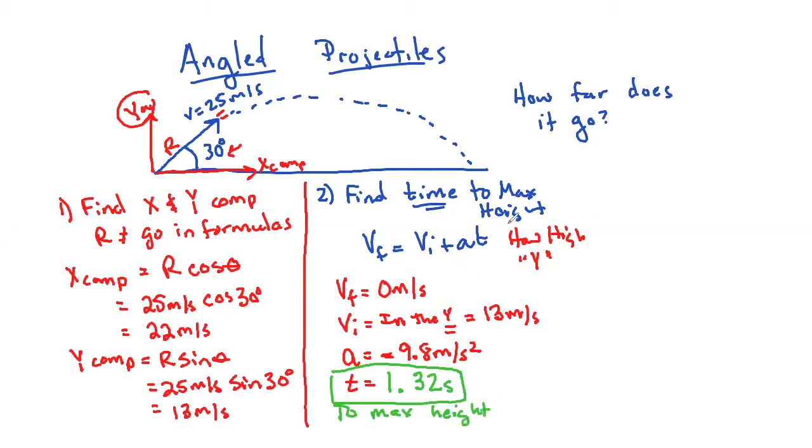Now, if per se, your teacher wanted you to find the distance to max height or how high did it go, if you wanted to do that, you could do that very easily using the same information. So for how high, then you would use D equals VIT plus one half AT squared. But for our goal here of how far does it go, which is really D in the X direction, we do not need to know really how high it goes. We just need to know the components, and then we need to know how long does it take to get to max height.